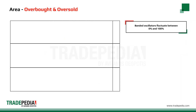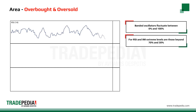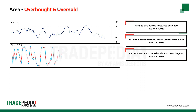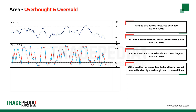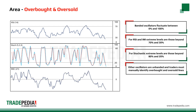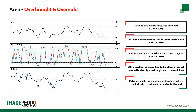Banded oscillators fluctuate between 0% and 100%. For RSI and IMI, extreme levels are those beyond 70% and 30%. For stochastic, extreme levels are those beyond 80% and 20%. Other oscillators like ROC or MACD are unbanded, meaning they have no minimum and maximum values, and traders must manually identify overbought and oversold lines. Extreme levels are manually determined and marked where the indicator shows a cluster of previous tops or bottoms.